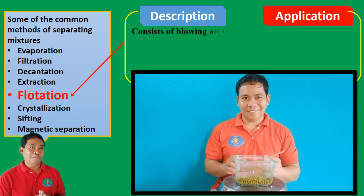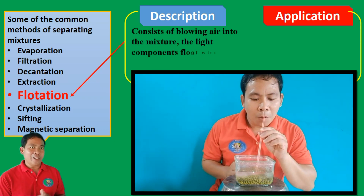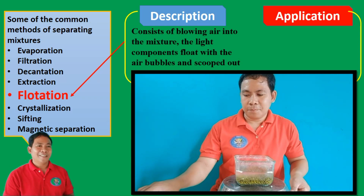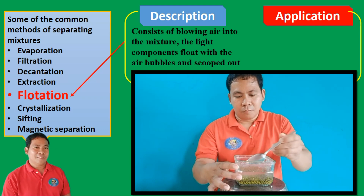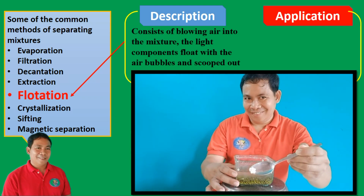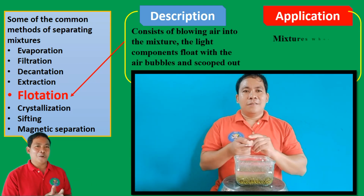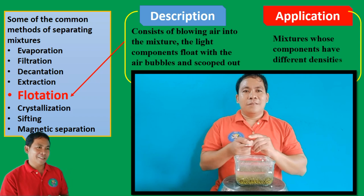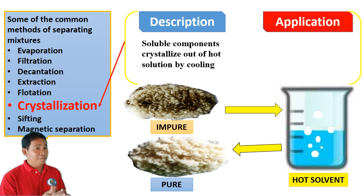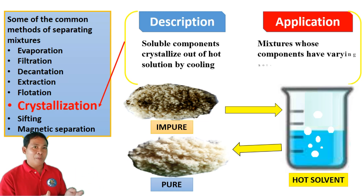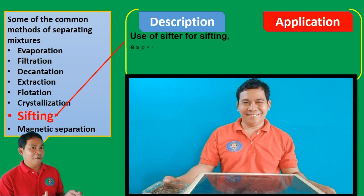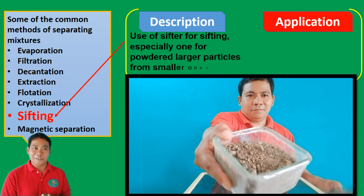Flotation consists of blowing air into the mixture; the light components float with the air bubbles and are scooped out. It is applied to mixtures whose components have different densities. Crystallization involves dissolving soluble components out of a hot solution, then cooling it to recrystallize. Sifting uses a sifter to separate large particles from smaller ones, especially for powder.